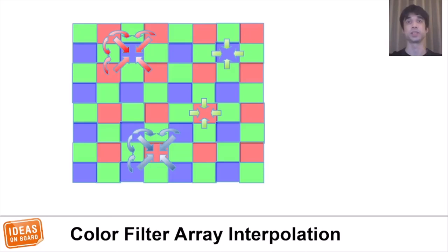We can interpolate the missing values. As shown in the diagram, for each pixel, we take the missing colors from the neighboring pixels that do have that color. This is just a simple example. In practice, for better quality, more complex interpolations would be used.